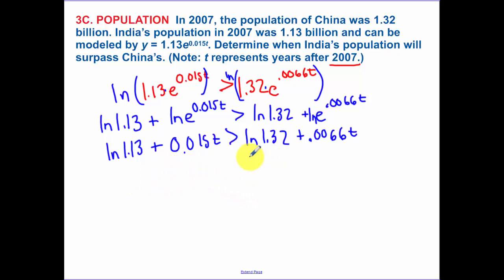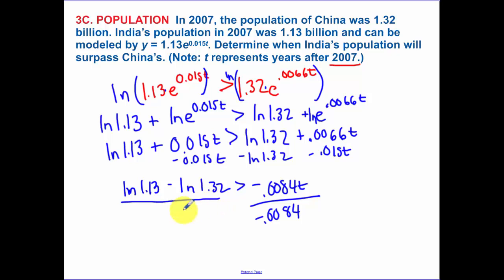Now I'm going to subtract this ln of 1.32 over to the left side. And I'm going to subtract the 0.015t over so that we have negative 0.0084t. I divide. Now make sure you keep in mind here, I've made it so that you're dividing by a negative. So you need to flip the sign. And this is just a matter of calculating that in your calculator. And we get 18.5 when I calculate this whole thing in my calculator.